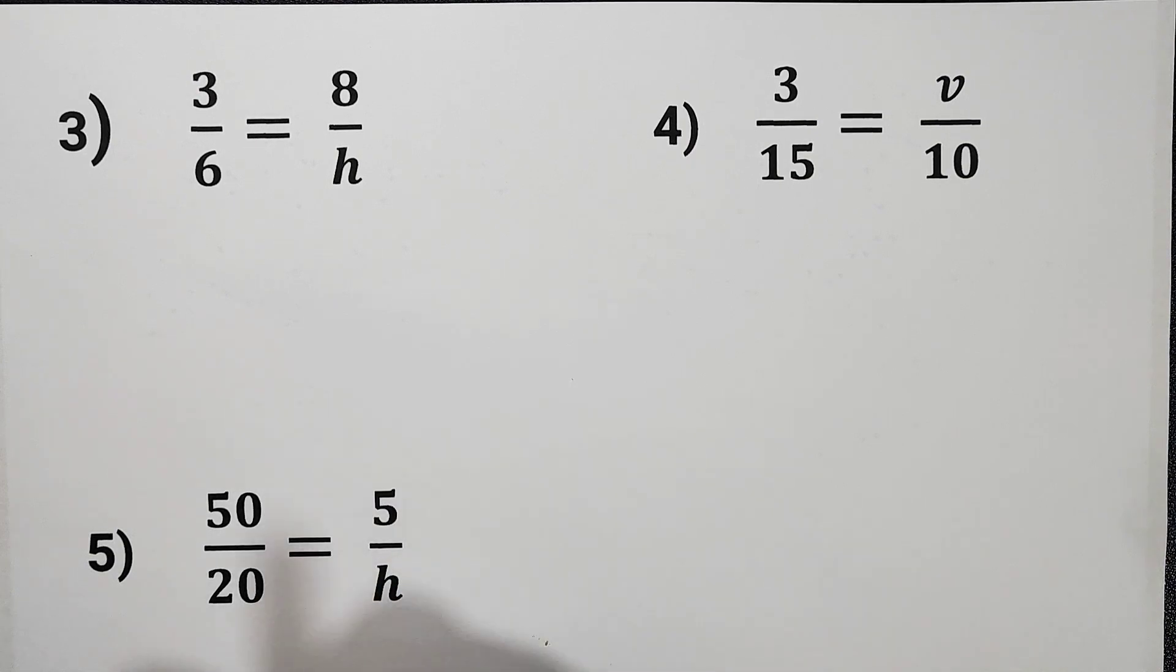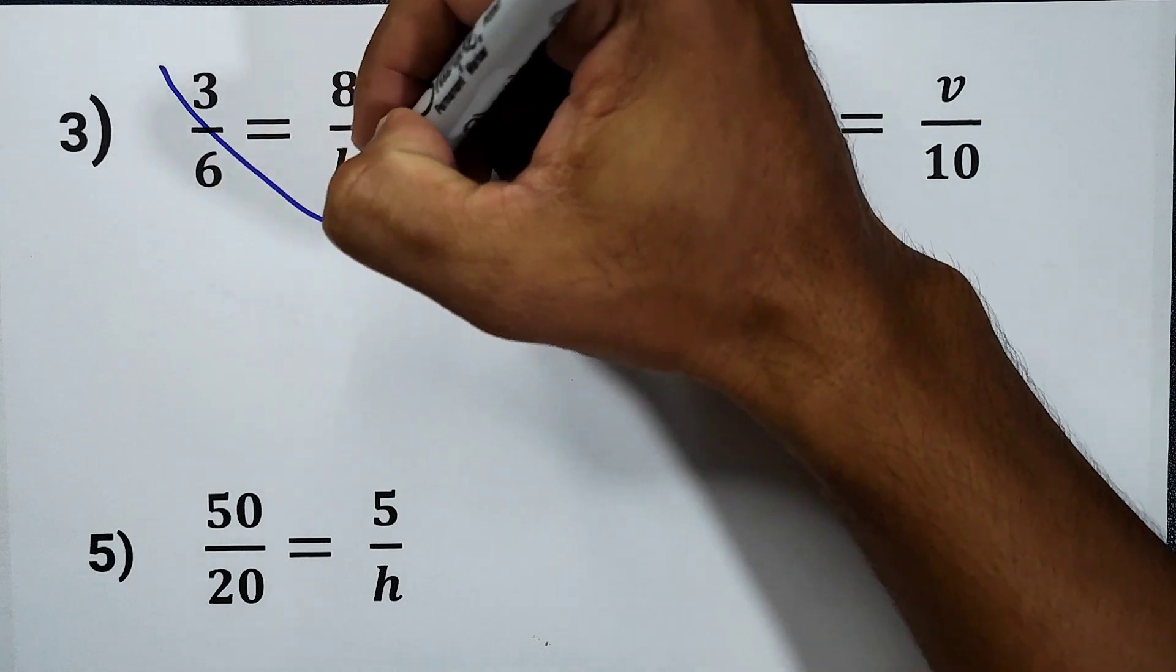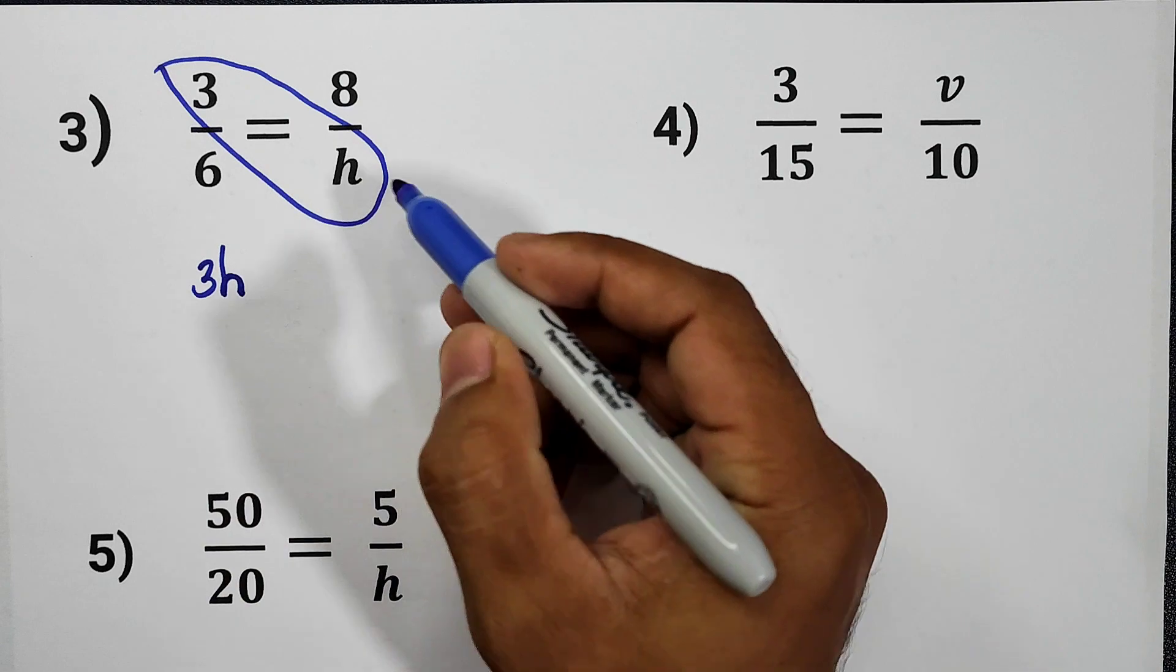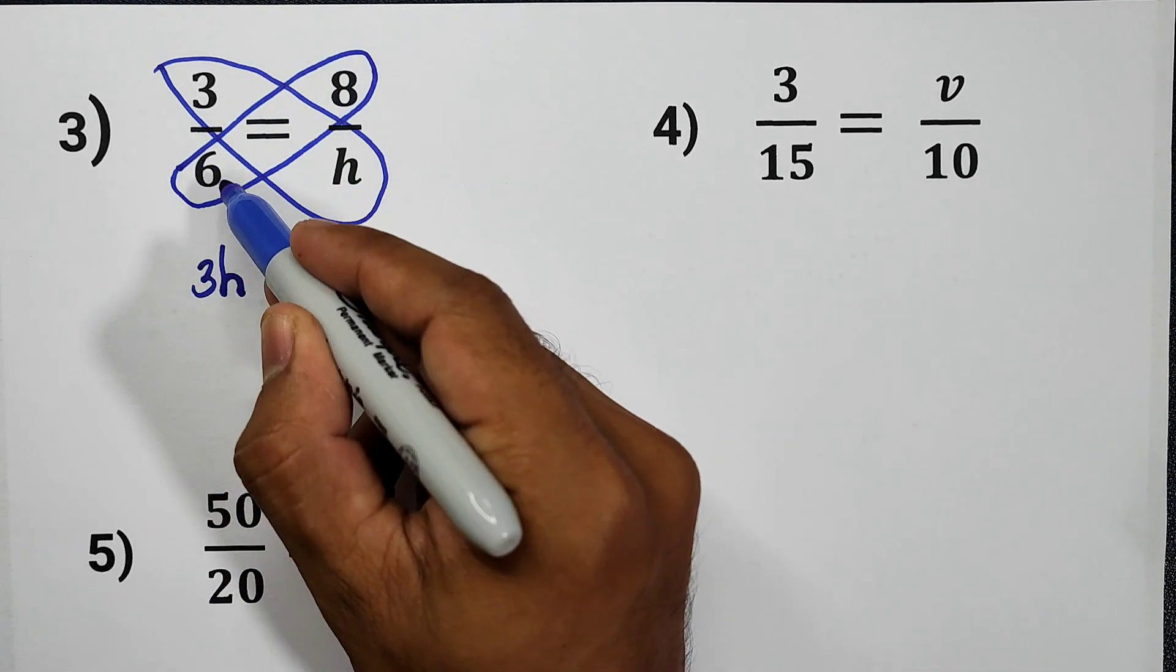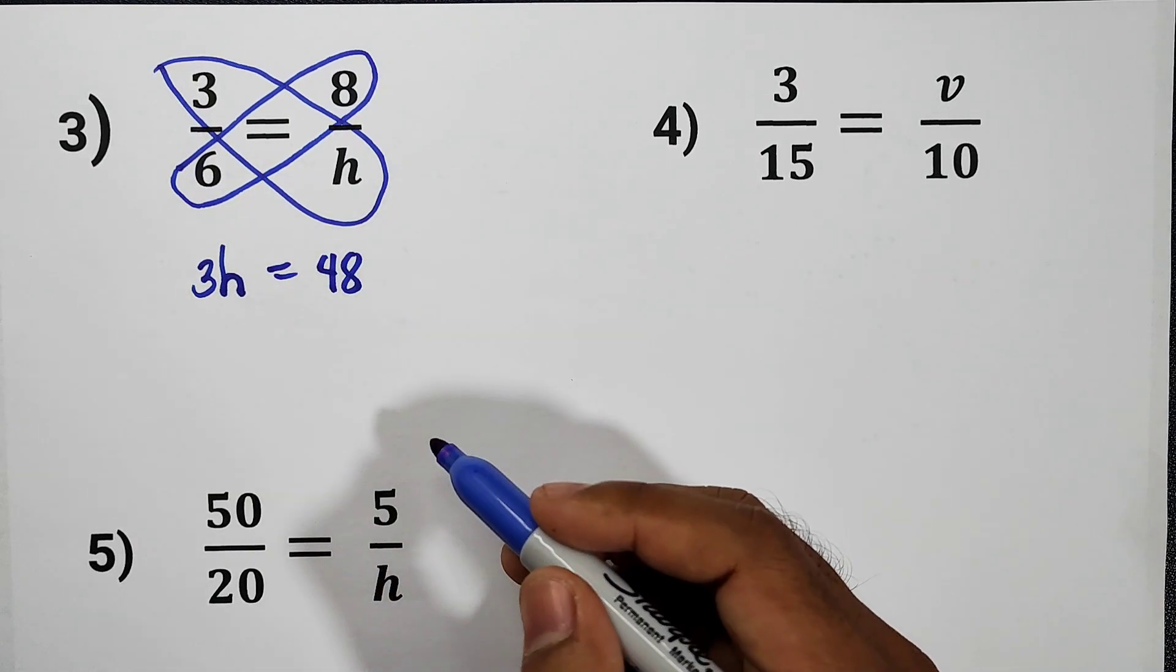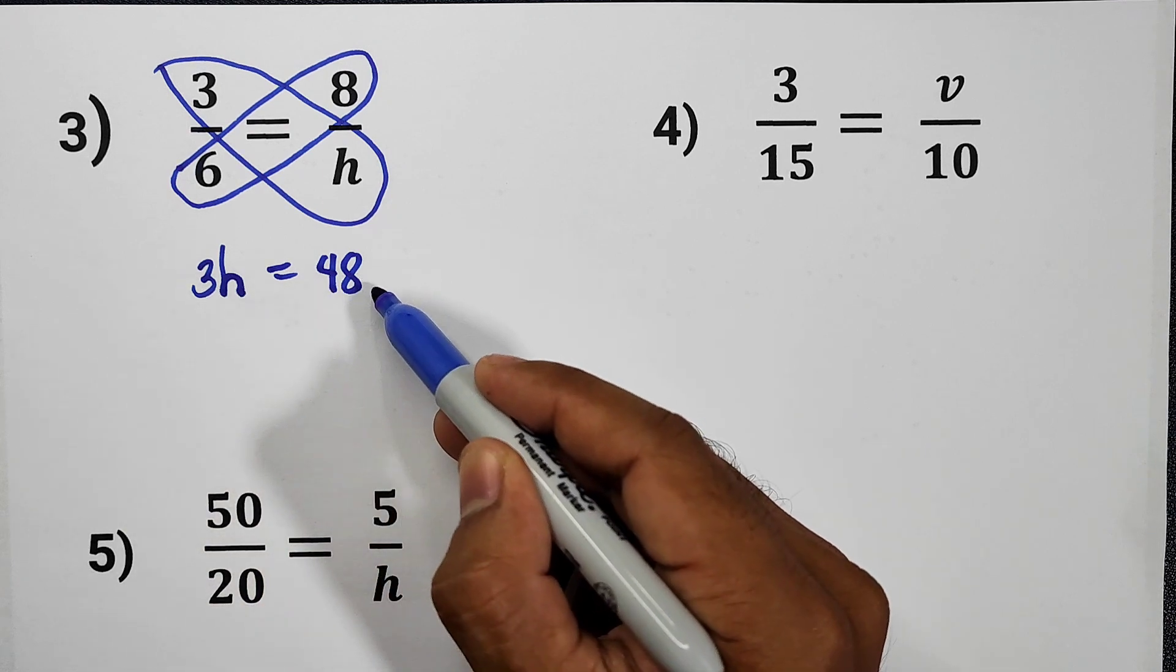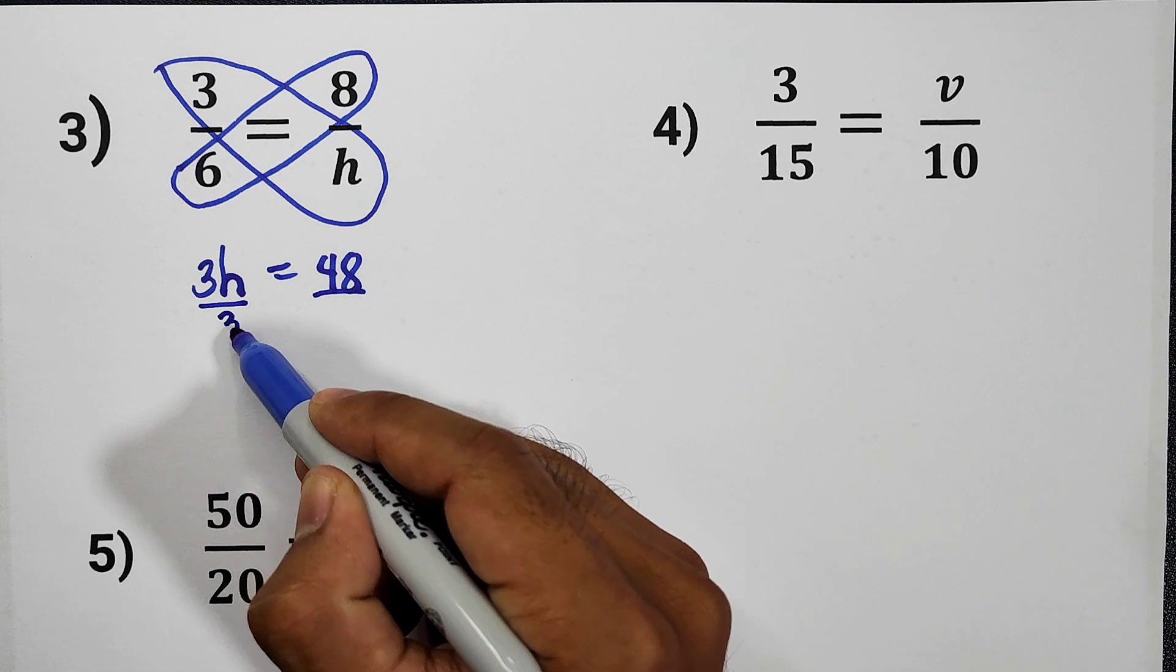So we have to cross multiply. 3 times H, that is 3H. And then 8 times 6, or 6 times 8, that is equal to 48. So now, 3H is equal to 48. Solve for H by dividing both sides by 3.